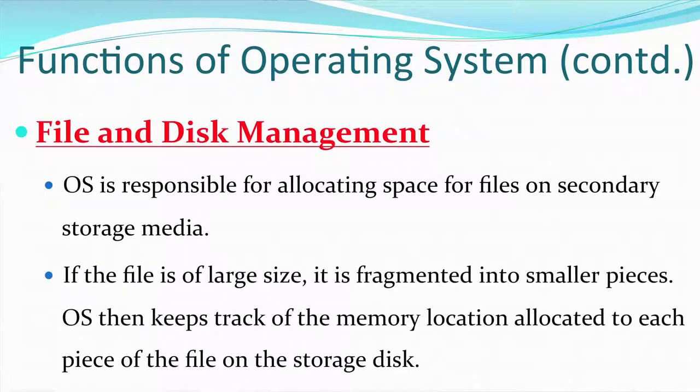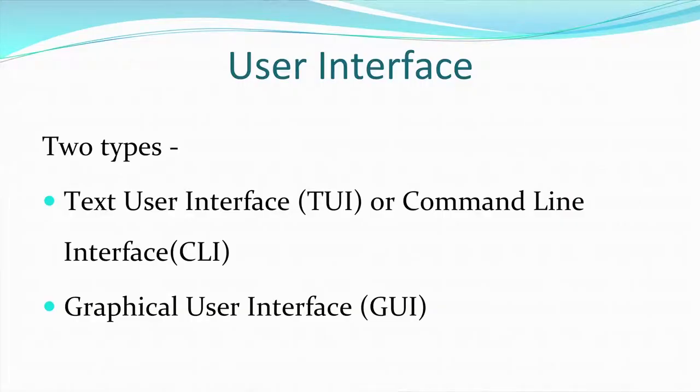If a file is of large size, it has to be broken down into small fragments. The operating system keeps track of those fragments — where they are stored and which fragment is being brought to primary memory for active reading. If the file is smaller, it is stored in a contiguous fashion. If it is larger, each fragment is processed according to the job to be performed. File and disk management is therefore controlled by the operating system.